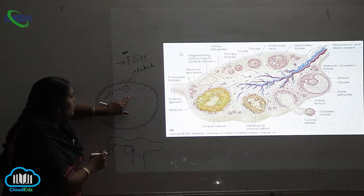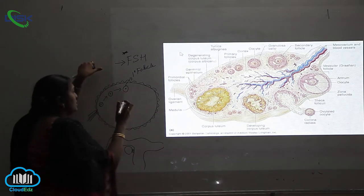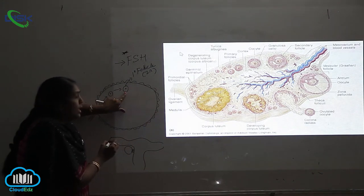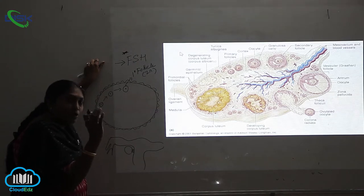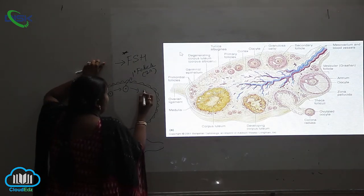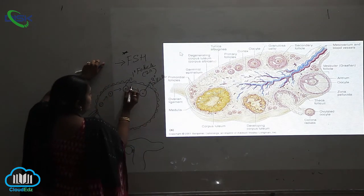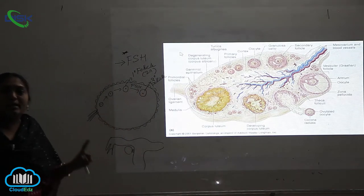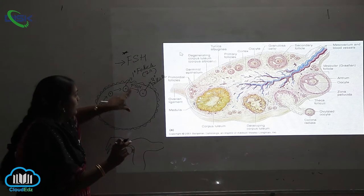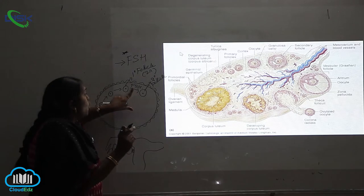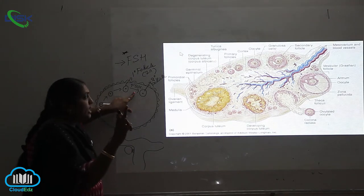In the primary follicle, the number of chromosomes is 2n — that is, it is always in a diploid condition. This primary follicle, after reaching some stage of growth, forms into a secondary follicle in the presence of FSH. The follicle stimulating hormone from the pituitary gland is essential for this transition.